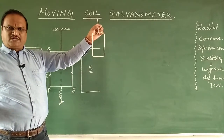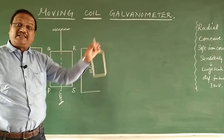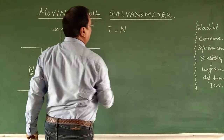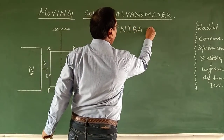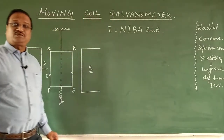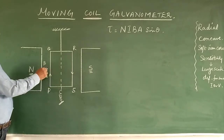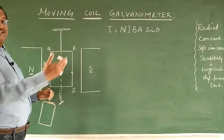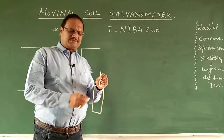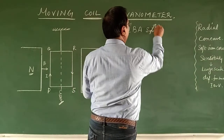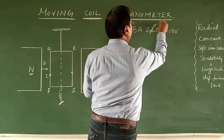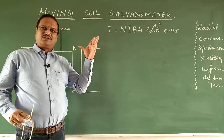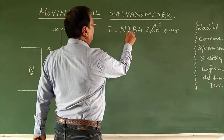A coil placed in a magnetic field, when current flows through it, experiences a torque. The torque formula is τ = nIBA sinθ, where n is the number of turns, I is the current, B is the magnetic field, A is the area of cross-section of the coil, and sinθ is the angle. We set θ = 90°, so sinθ = 1, giving τ = nIBA.